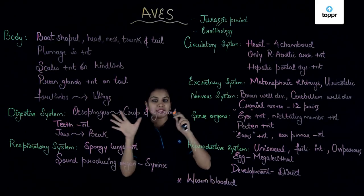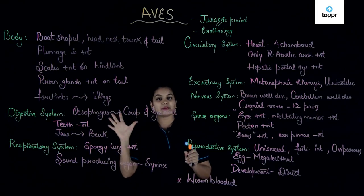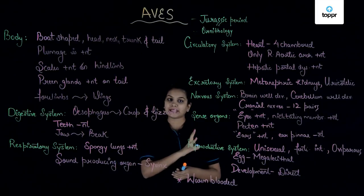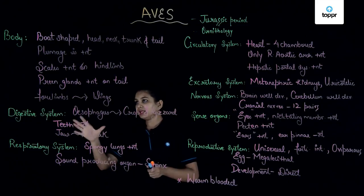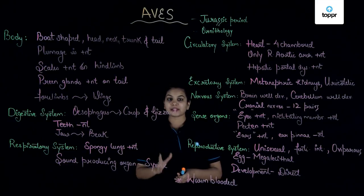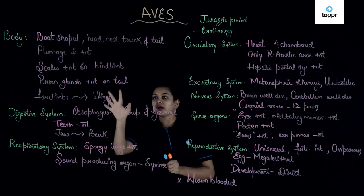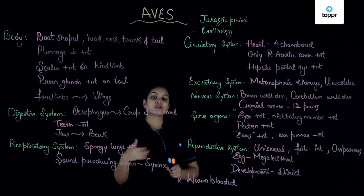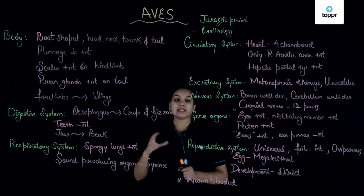Birds have an entire covering of feathers which is called plumage. They have scales present only on the hind limbs; the rest of the body does not have scales. They have preen glands present — although glands are not present on the entire surface and the skin is generally dry, on the tail region or hind limb they have preen glands. These preen glands, or oil glands, produce oil which keeps the feathers moist.